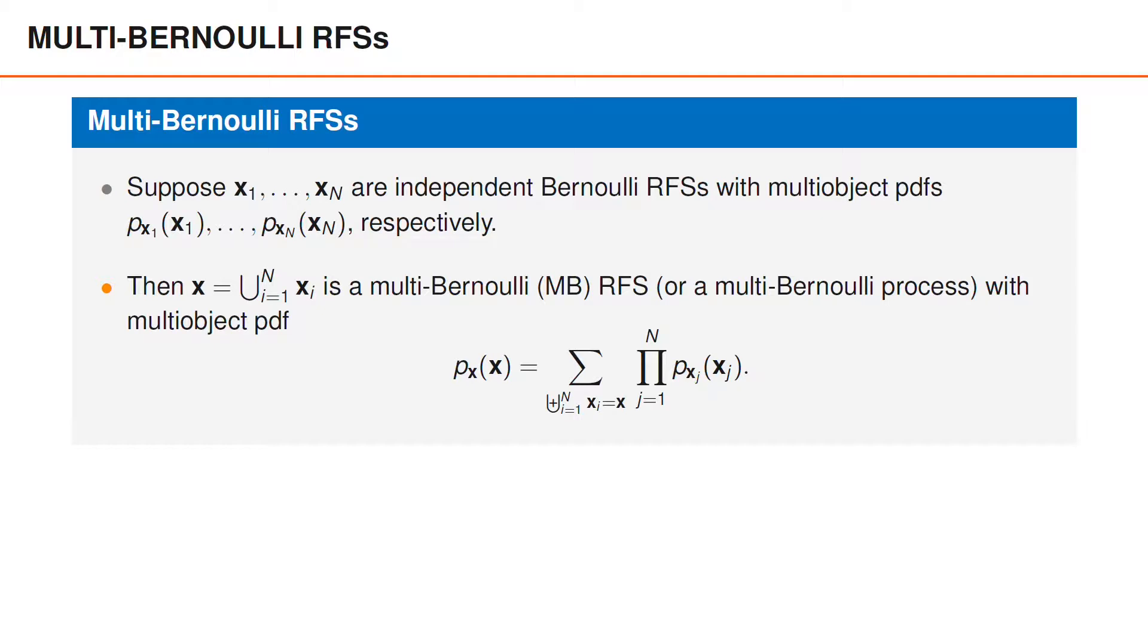Also, since x is the union of independent random finite sets, we can use the convolution formula to express its multi-object PDF. Specifically, to express the multi-object PDF of x, we take the sum over all disjoint sets x1 to xn whose union is x of the product over the corresponding multi-object PDFs.